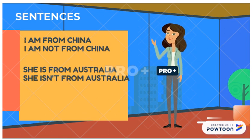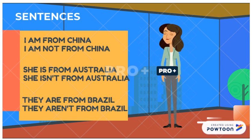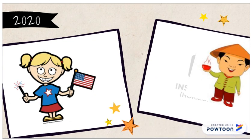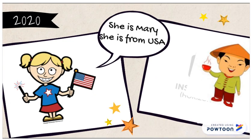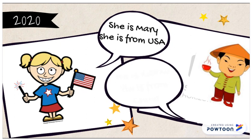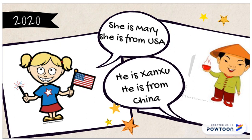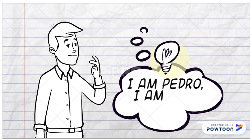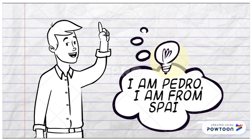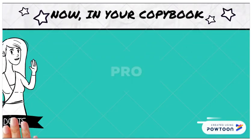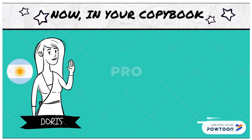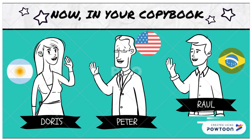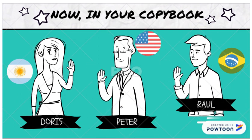Example sentences: I am from China, she is from Australia, they are from Brazil. More examples for you to practice: she is from USA, she is from China, I am Pedro, I am from Spain. Please now in your copybook create sentences for these people: Doris, Peter, and Raul.